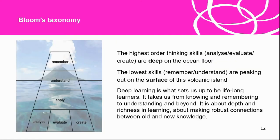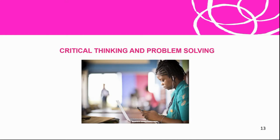Bloom's Taxonomy on your screen is upside down, and it's for a reason. The lowest-order thinking skills are at the top: remember. But if you can't remember things and don't understand them, you can't apply that information. Once you can't apply information, you can't analyze, evaluate, or create. The highest-order thinking skills — analyze, evaluate, create — found at the deep end of the ocean floor, enable kids to learn deeply. Deep learning is what sets us up to be lifelong learners. It takes us from knowing and remembering to understanding and beyond. It's about depth and richness in learning, and making robust connections between old and new knowledge.